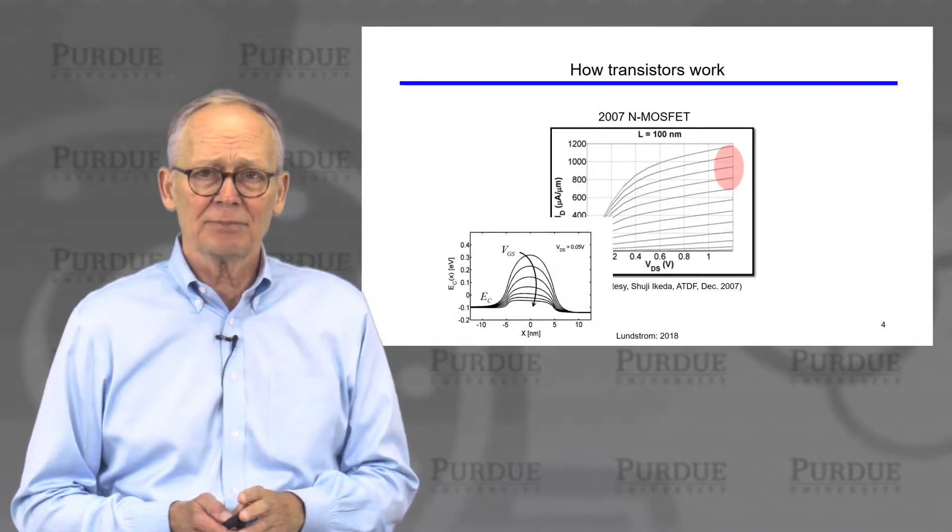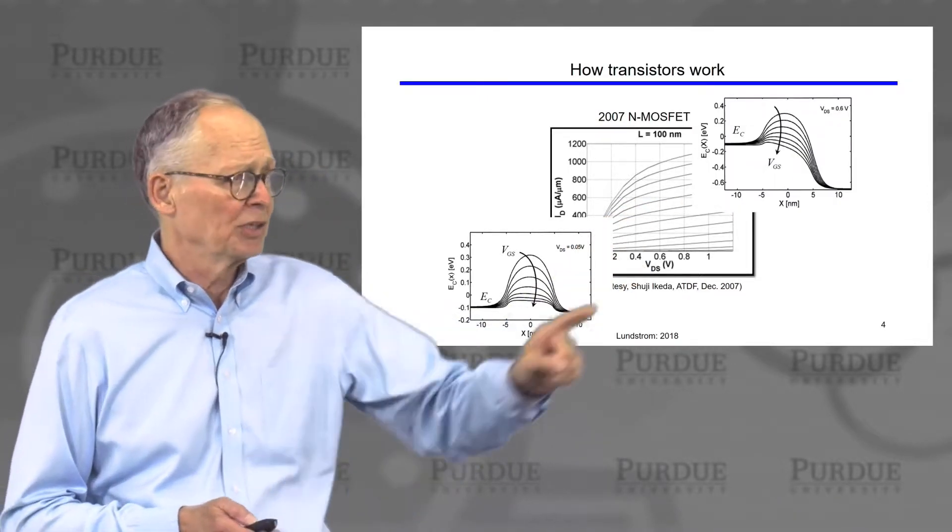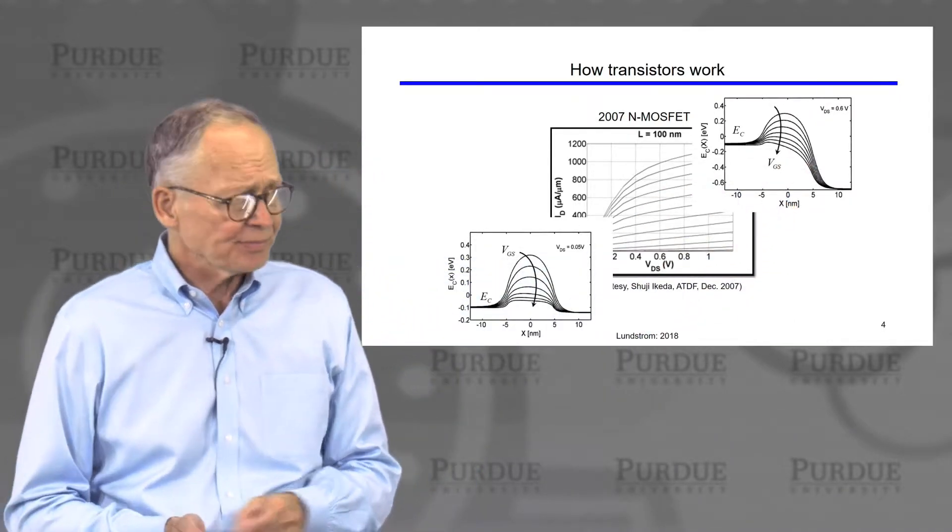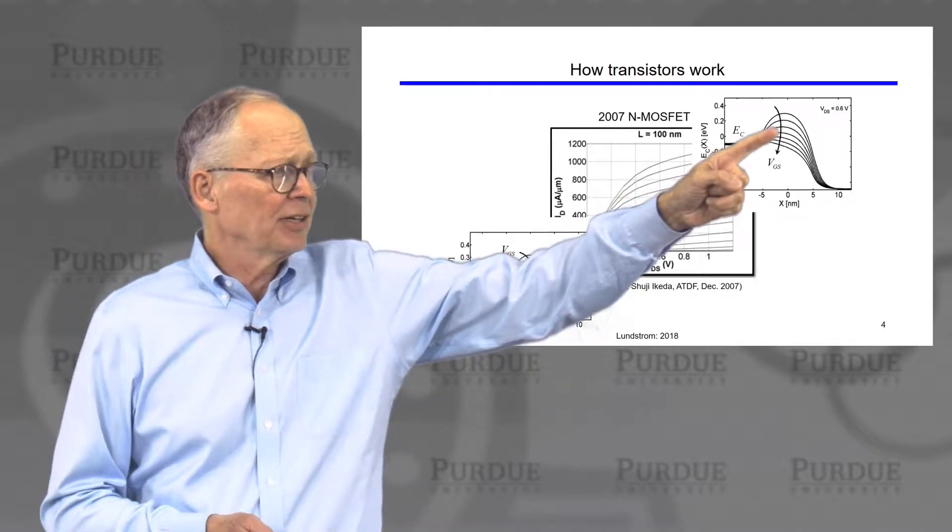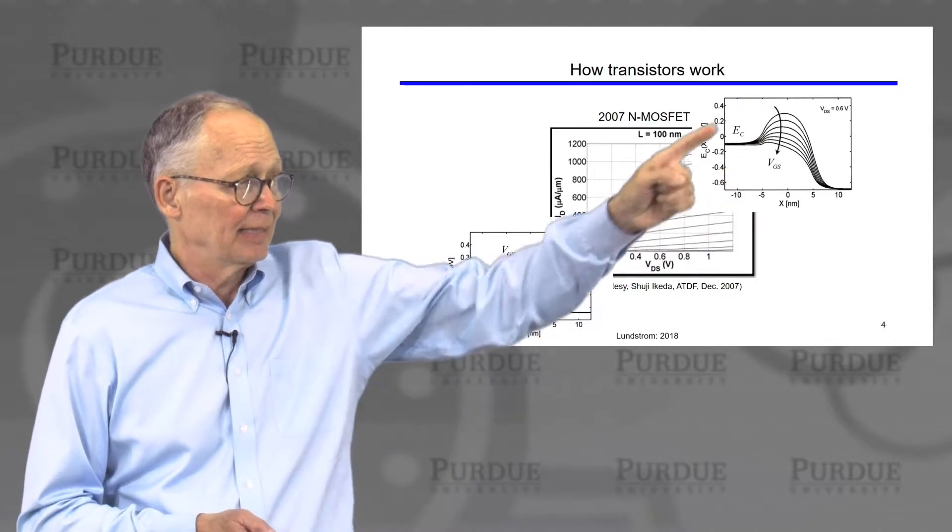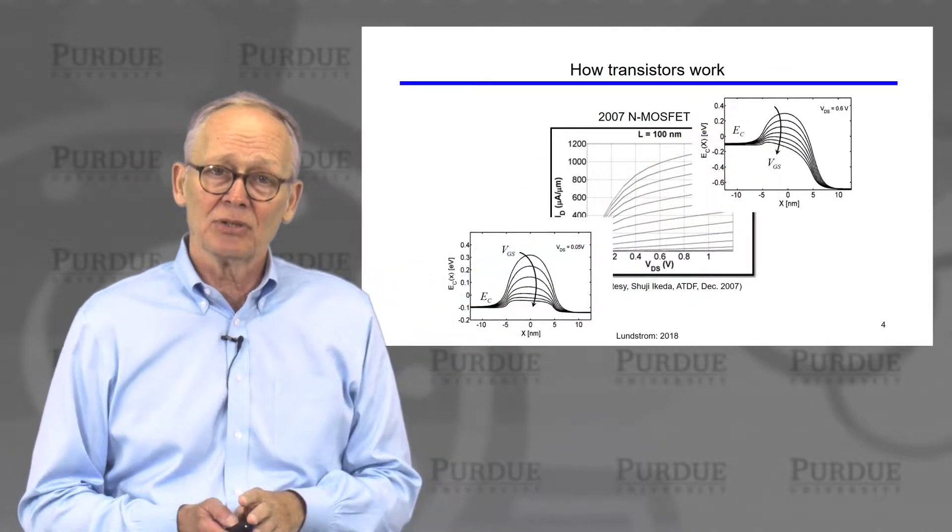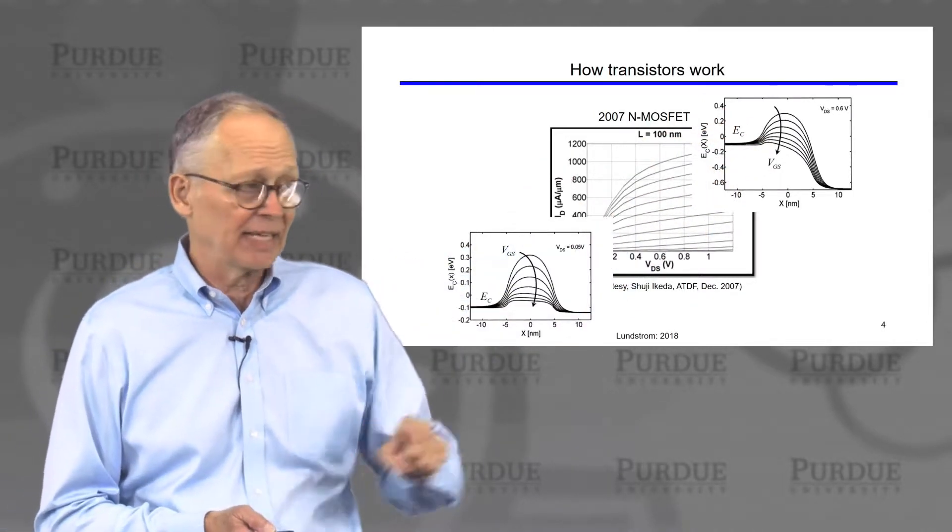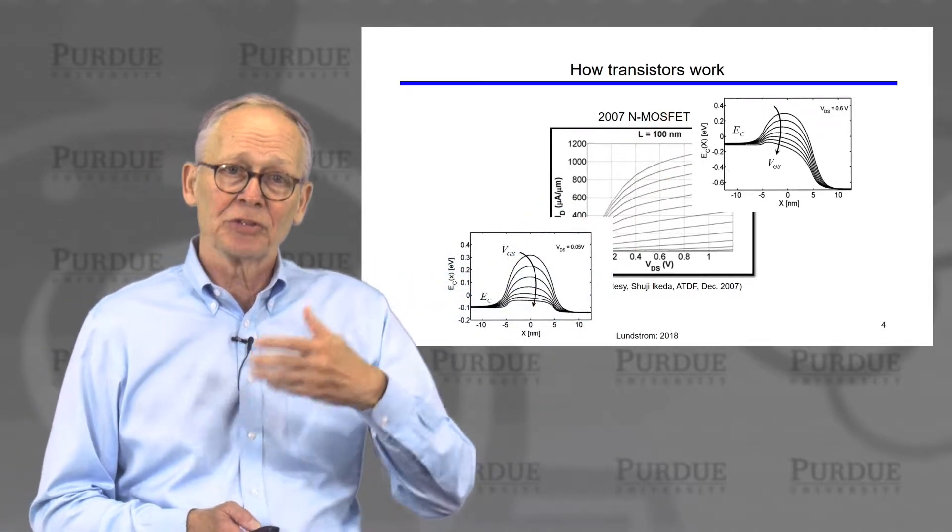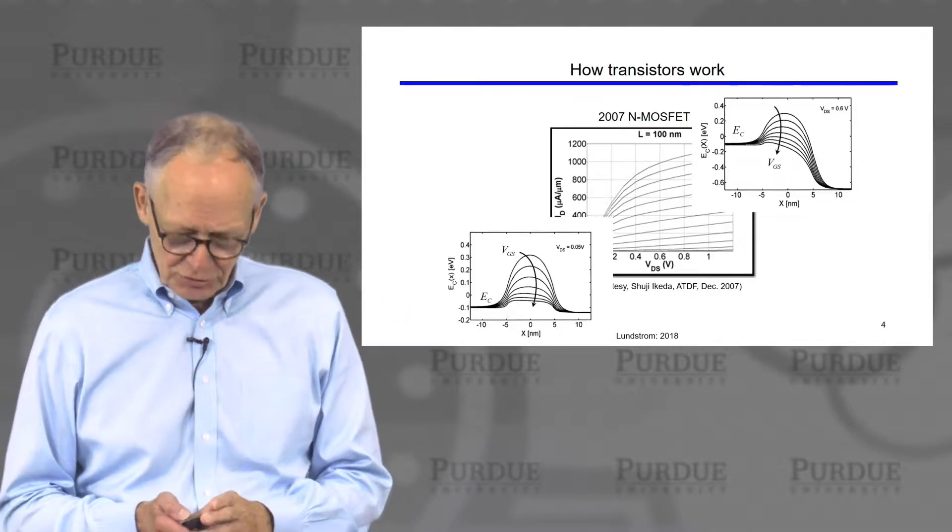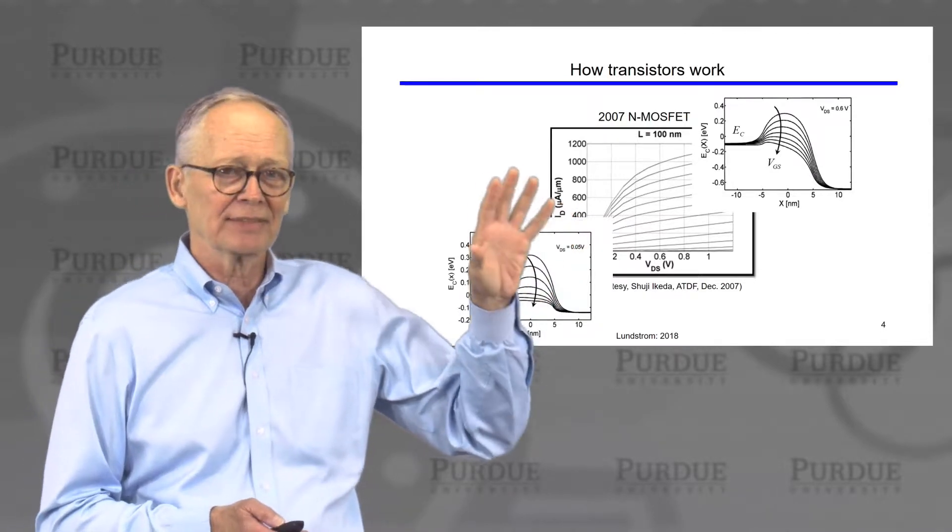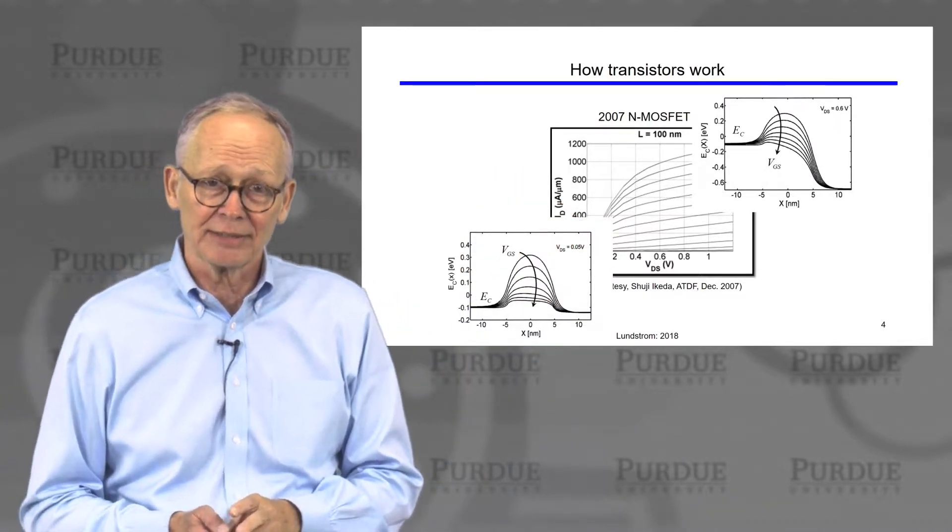In the saturated regime, that's the regime where the drain voltage is high. We've pulled the conduction band in the drain way down, but the height of the barrier is controlled by the gate voltage in a well-designed transistor. Only leakage current flows unless we apply a positive gate voltage, push the barrier down, and then electrons flow out of the source over the small potential barrier downhill all the way to the drain and out to contact. This is a very simple but very physical picture of how a transistor operates.